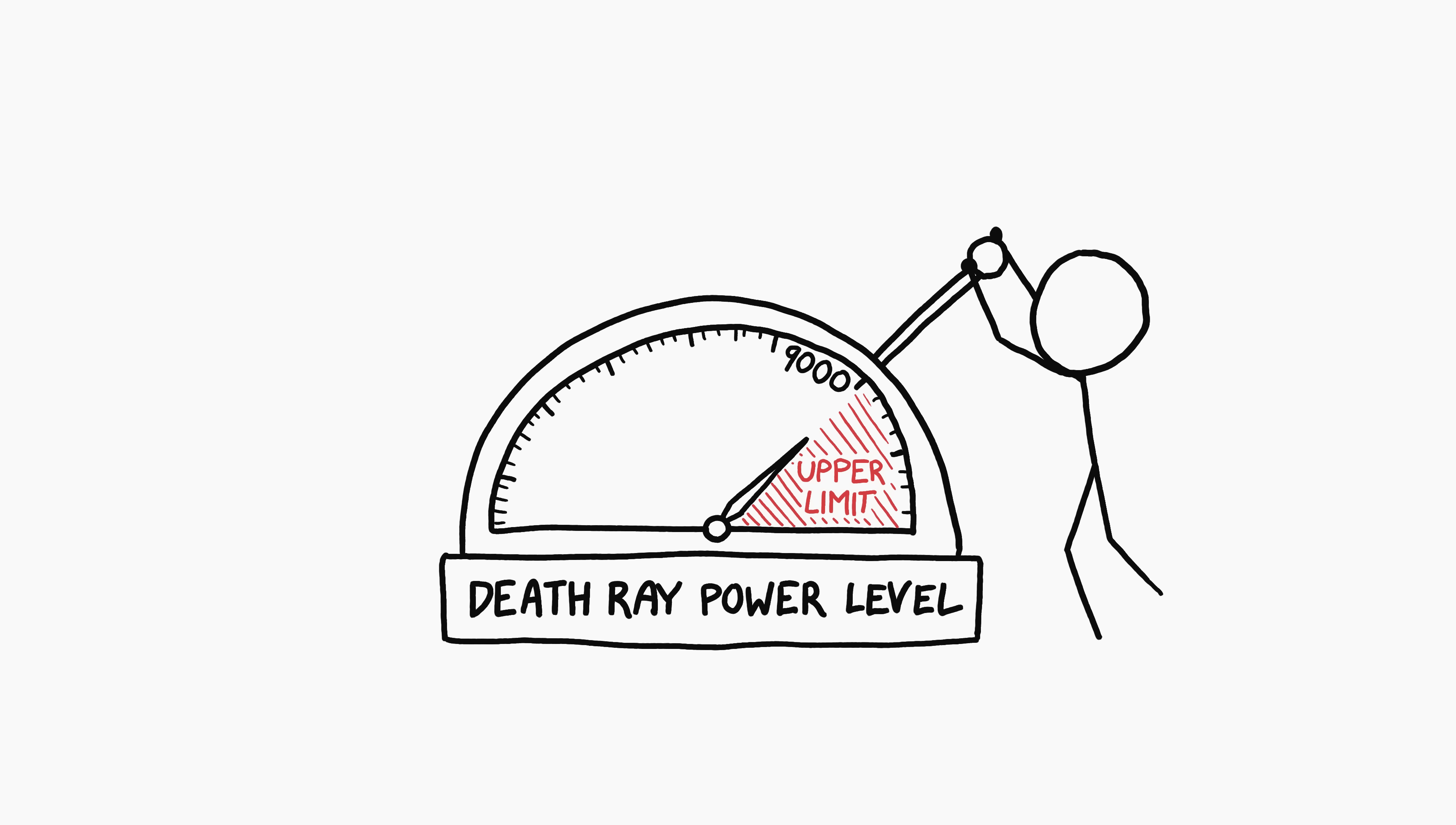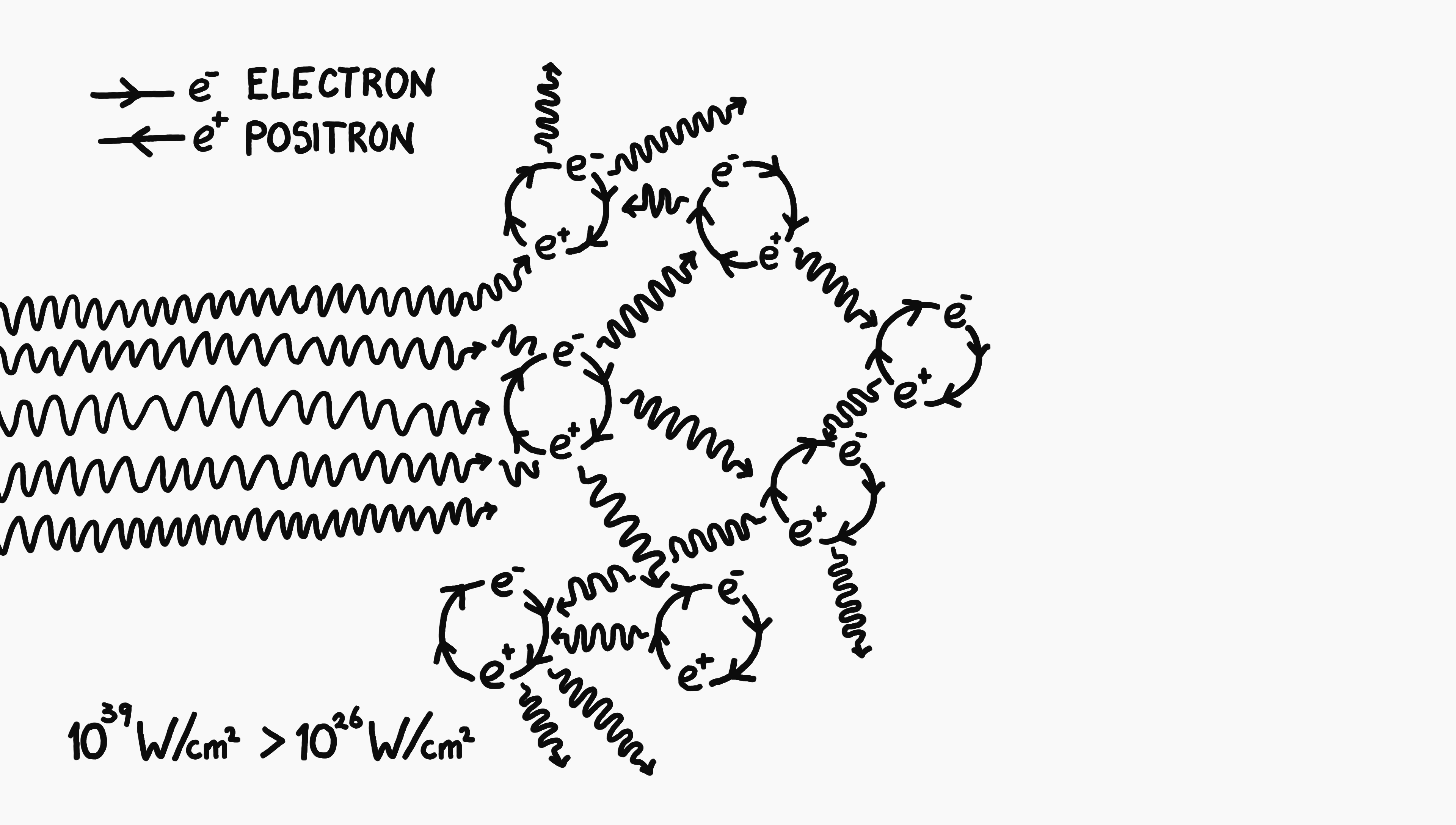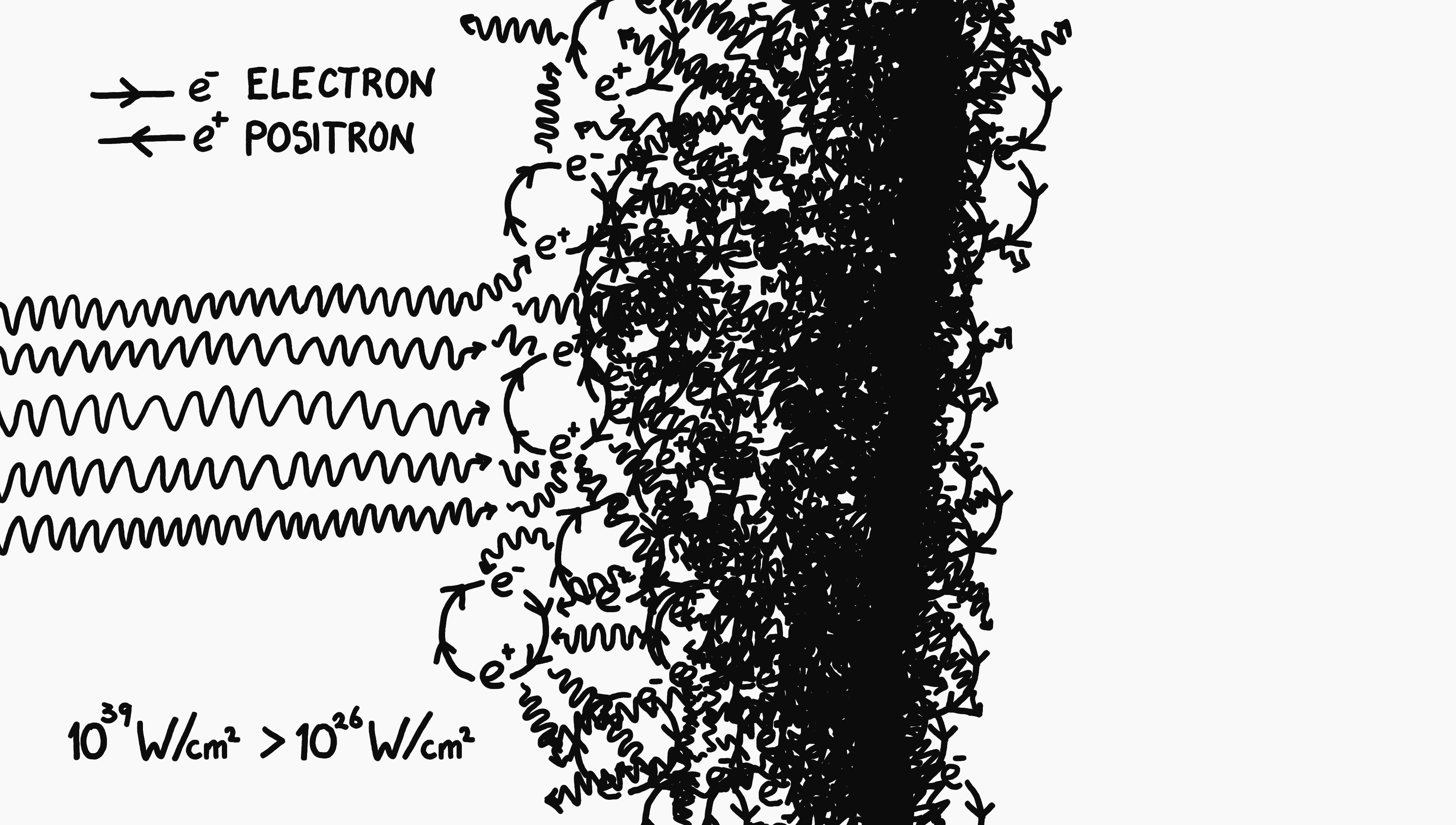But physics has another surprise, one that finally puts an upper limit on how powerful lasers can get. Namely, if a beam of light gets too bright, space itself stops being transparent. If you pack enough laser energy into a small enough space, quantum mechanics predicts that the strong electromagnetic fields will result in spontaneous creation of particles and antiparticles. These particles, mostly electrons and positrons, would intercept some of the laser energy, which would result in more particles being created. For laser power densities above about 10 to the 26 watts per square centimeter, this process is expected to cascade, fully halting the laser's progress and providing an upper limit on how much power our beam can have.